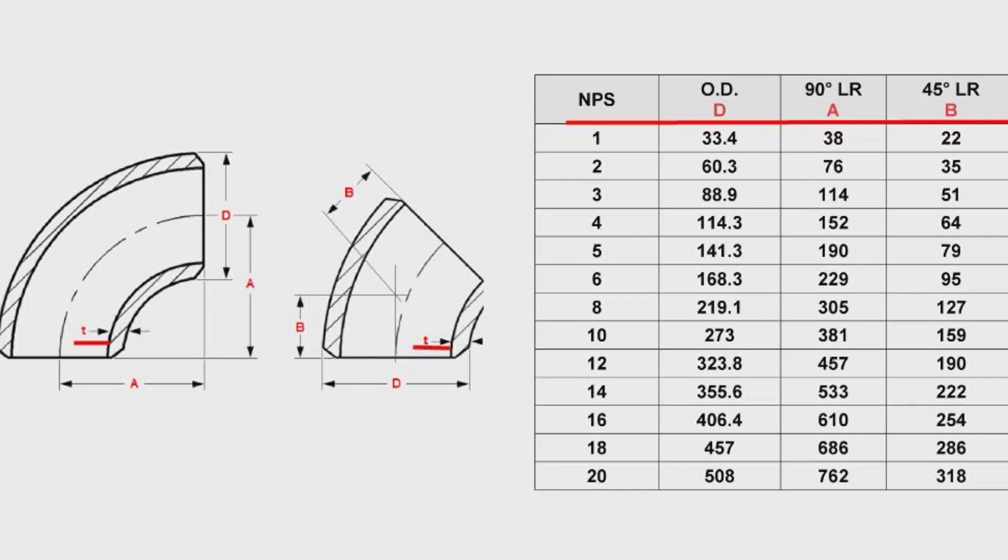We can see in the table, that the outside diameter of the 1 inch pipe is 33.4 mm, the size of 90 degree elbow is 38 mm. The size of 45 degree elbow is 22 mm. The outside diameter of the 2 inch pipe is 60.3 mm, the size of the 90 degree elbow is 76 mm.